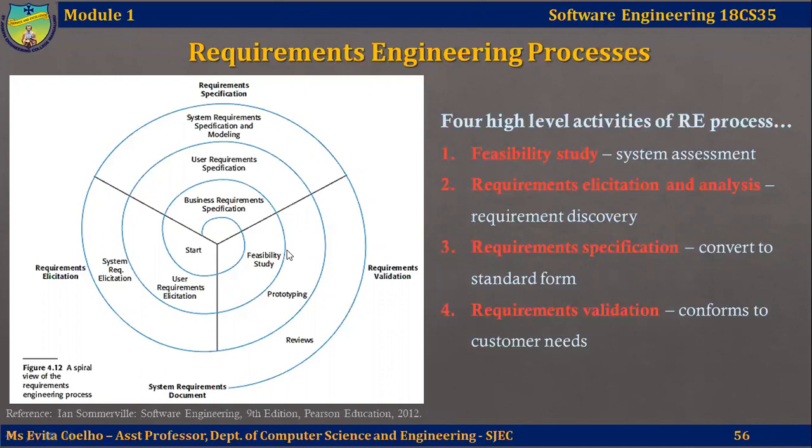The next high-level activity is called requirements elicitation and analysis — this is all about discovering requirements. The third high-level activity is called requirement specification, where the requirements discovered are converted into a more standard form. The last high-level activity is called requirements validation, where the requirements are checked to confirm they define the system and what the customer wants. In practice, requirements engineering is an iterative process in which all these activities are interleaved.